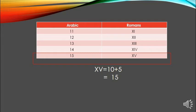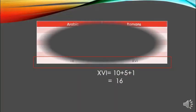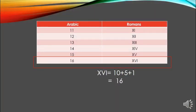16 represents XVI because X equals 10, V represents 5, and I represents 1. So add these three values: the answer is 16. So 16 represents XVI.